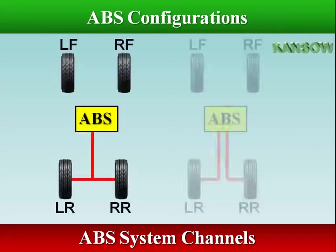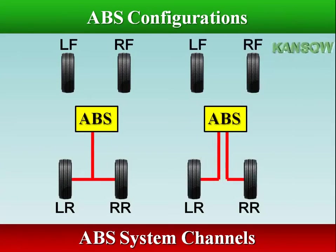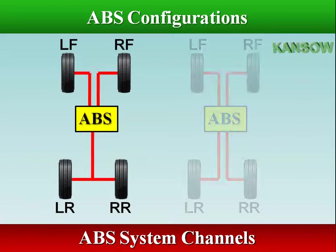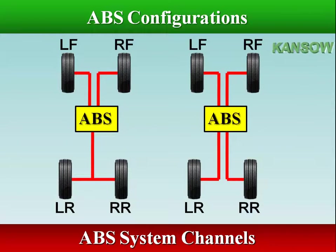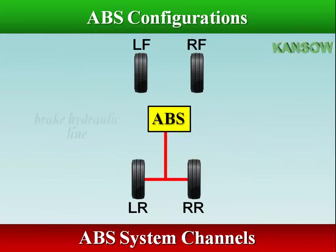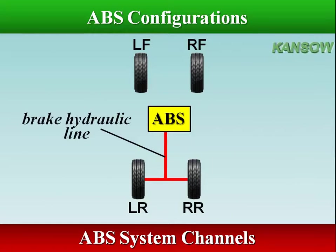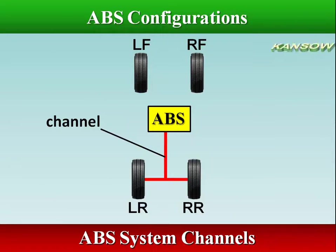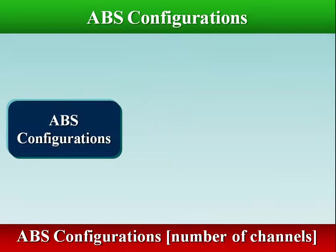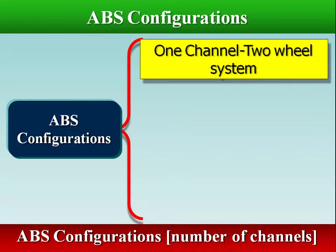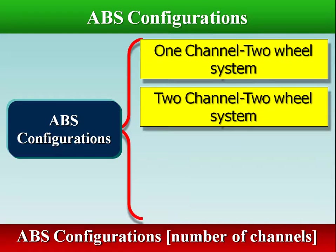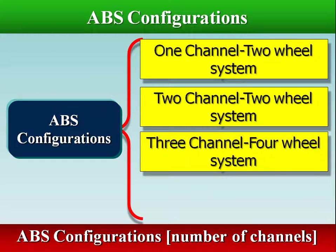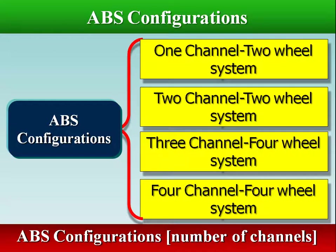Anti-lock braking systems use different schemes depending on the type of brakes in use — that is, the number of channels. A channel describes a brake hydraulic line that is capable of being controlled by the ABS. Anti-lock braking systems can be classified based on the number of channels and sensors employed: 1-channel 2-wheel, 2-channel 2-wheel, 3-channel 4-wheel, and 4-channel 4-wheel systems.